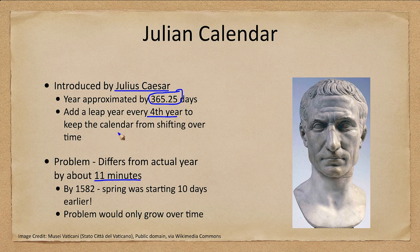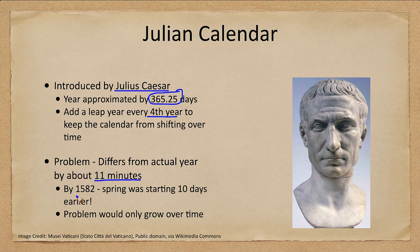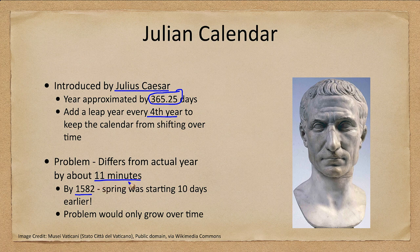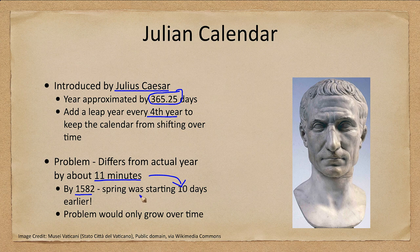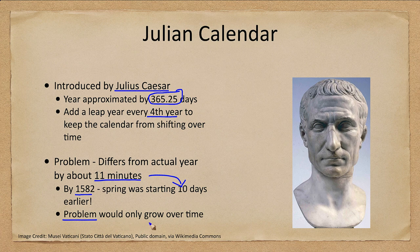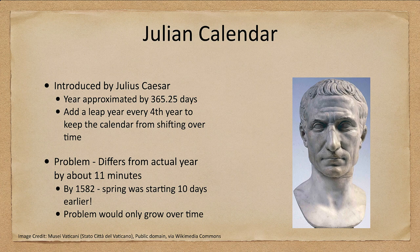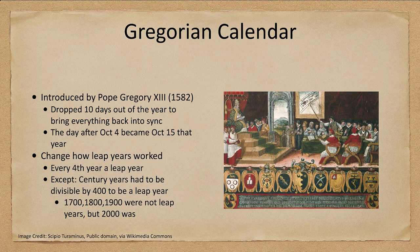However, over more than a thousand years by 1582 this 11 minutes a year had added up to 10 days. So now spring was starting 10 days earlier and this problem would only continue to grow. So what could be done? Well we had to redo the calendar and that was done in 1582 and that is what we use as the Gregorian calendar given by Pope Gregory the 13th.